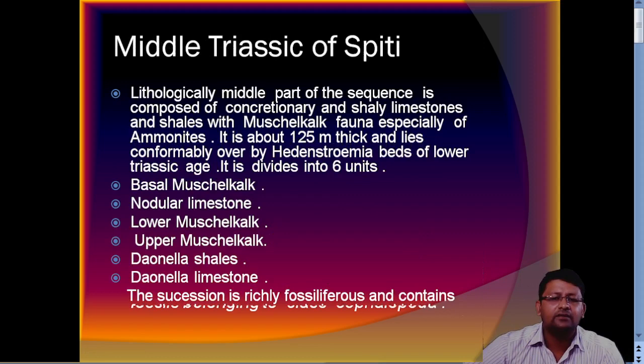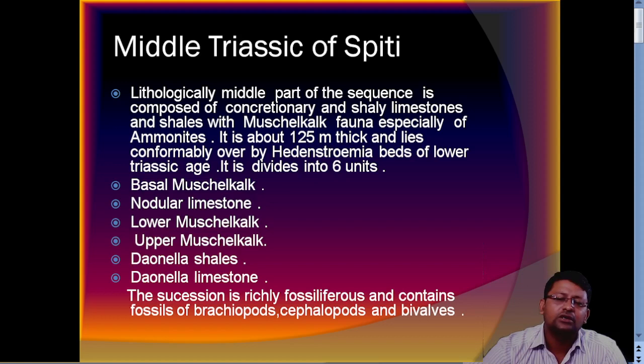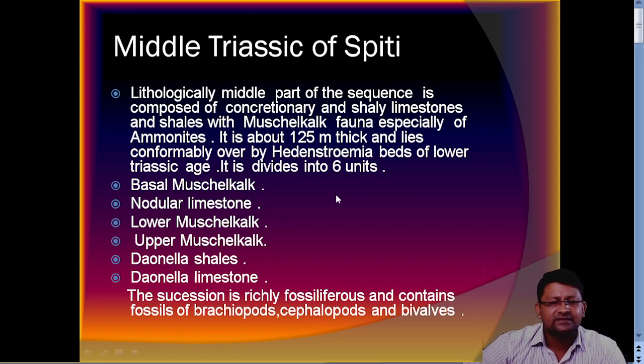Then we have the middle Triassic succession. This is concretionary and shelly limestone, 125 meters full thickness. This is the Hedenstroemia bed, which is lower Triassic — it is just limestone.